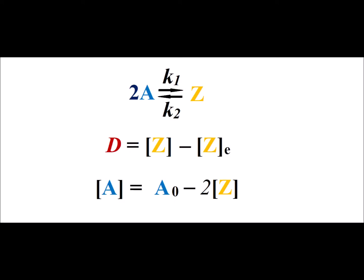Hello. In this video, we are going to derive an expression for the relaxation time for reaction of the form 2A goes to Z, where k1 is the second-order rate constant in the forward direction, and k2 is the first-order rate constant in the reverse direction.